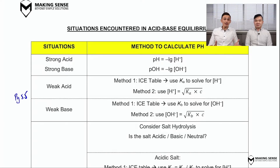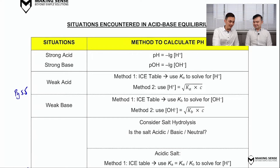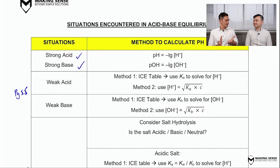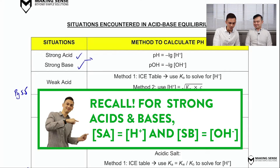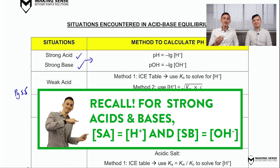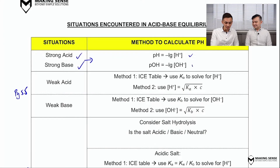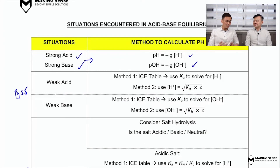So over there, there is what we call these situations that you encounter in acid-base equilibrium. The whole point is you must be aware there are four big situations we encounter in this chapter, and your job is to identify the situations and then be able to apply the correct method to solve for the question. So we just quickly go through whatever we have done across the past three weeks. We started off by teaching students what are examples of strong acids and strong bases, and the key thing about strong acids and strong bases is — they're going to fully dissociate.